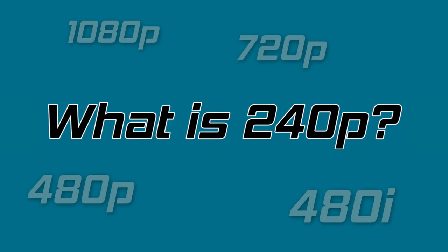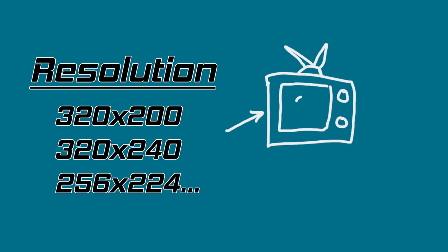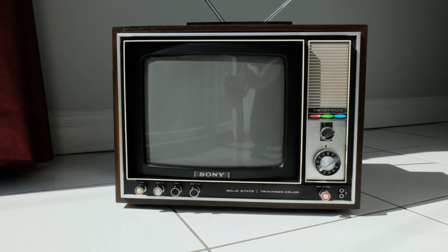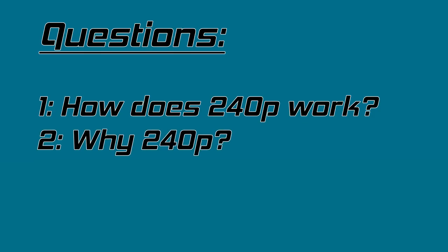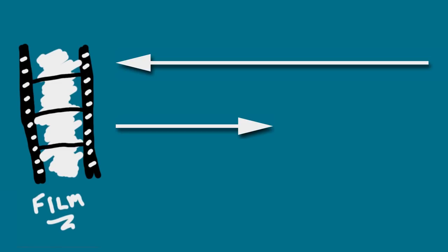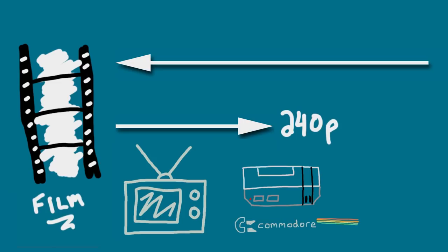What is 240p? For most gamers, it is simply assumed to be a low resolution that was used for older games. While this is true, the resolution and how it was displayed is a much more complicated answer. It was used at a time when consumers had CRT televisions, devices designed for an interlaced video signal. So perhaps the true questions are: how does 240p work, and why 240p? Let's jump back in time to the early days of film and work our way forward to 240p, with an emphasis on the display rather than the game console or computer.